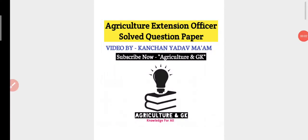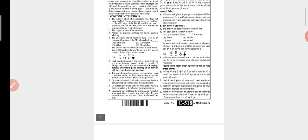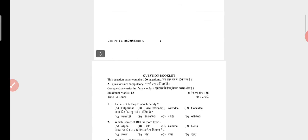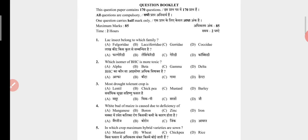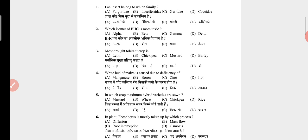Hello everyone, welcome to our YouTube channel Agriculture NGK. I'm Kanchan Yadav and today I am going to discuss the Agriculture Extension Officer solved question paper. Before starting the video, if you are new to this channel, please subscribe, like and share the video. This booklet contains 170 questions and each question carries half marks. Now we start with the first question.